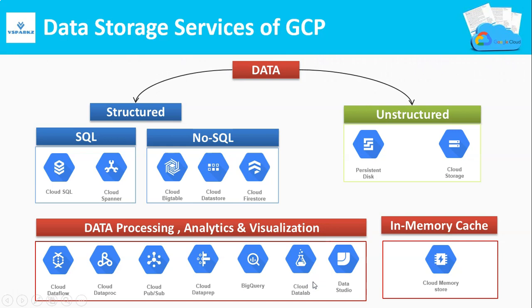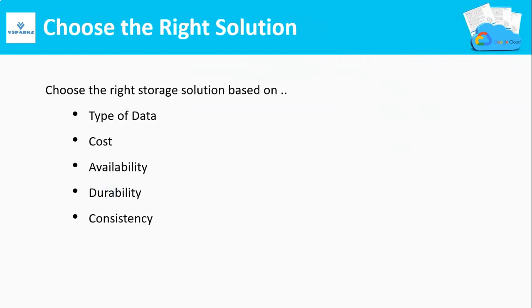These are the services offered by Google Cloud for each type of data. You need to choose the service based on the type of your organizational data. For example, if you have relational data, you can choose either Cloud SQL or Cloud Spanner. We will discuss each service in the forthcoming slides. You need to choose the right service based on the type of data, cost, availability, durability, and consistency.